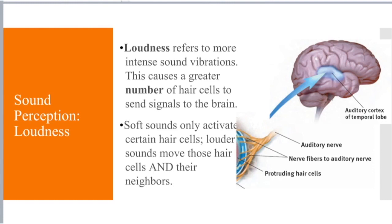Loudness refers to the intensity of sound vibrations, which causes a greater number of hair cells to send signals to the brain. In the inner ear, the fluid moves faster, more hair cells are activated, and they send more signals to the brain. Softer sounds only activate certain cells, whereas louder sounds move those hair cells and their neighbors — it's like a chain reaction. The cochlea is lined with little hair cells surrounded by fluid; when that fluid moves because of vibrations from the middle ear and eardrum, this transitions into neural impulses sent to the temporal lobe for perception.